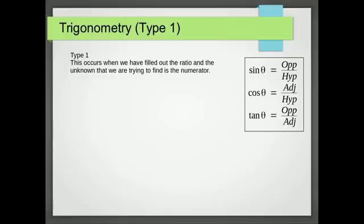As you can see we have our three different ratios. So we've got sine is opposite over hypotenuse, cos is adjacent over hypotenuse, and tan is opposite over adjacent. Those have got nothing to do with the type of equations, they're just the ratios.